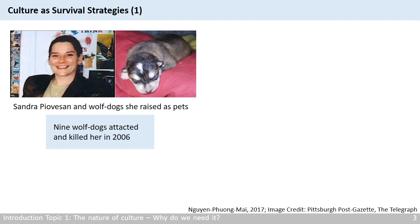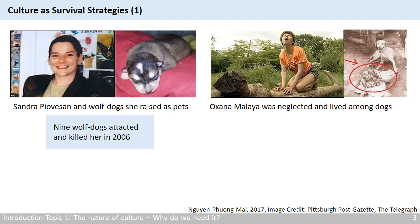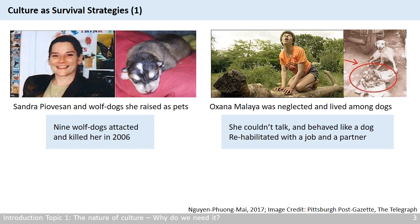Let's compare this with Oksana Malaya, a Ukrainian woman who was neglected by her parents during her childhood, and so she spent her time among the family's dogs. When she was found at age 7, she couldn't talk, she would crawl on all fours, and she behaved like a dog. It took a long time for her to come back into human society. Eventually, she had a job and a partner. There are many similar cases in the world.